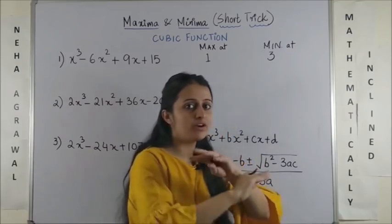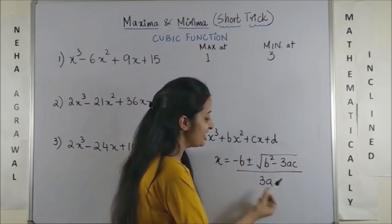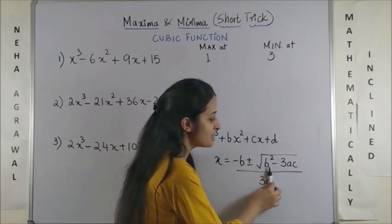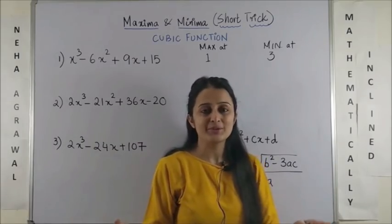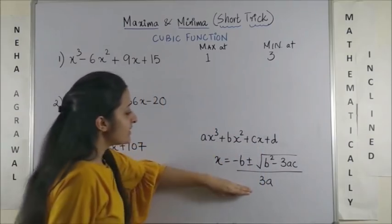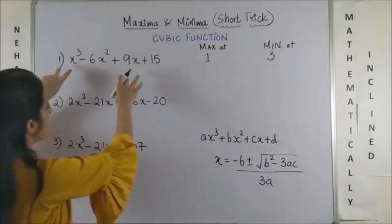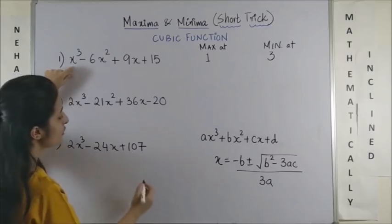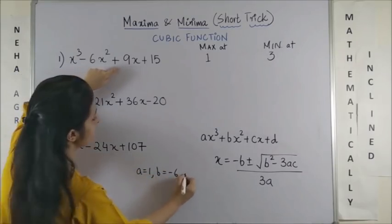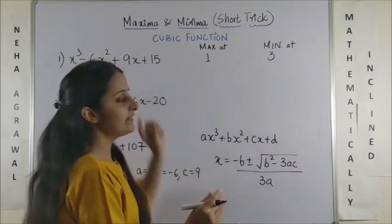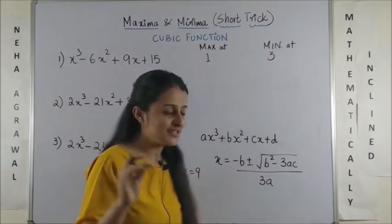Now, since this is cubic we want everything in terms of 3. So, minus b plus minus b square minus 3ac upon 3a. That's all you need to remember and making use of this formula if I compare this equation. First of all you know a is 1, b is minus 6, c is 9 and d doesn't have any relevance in our question.